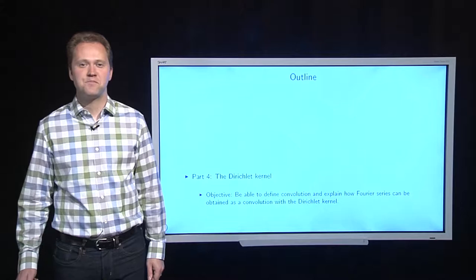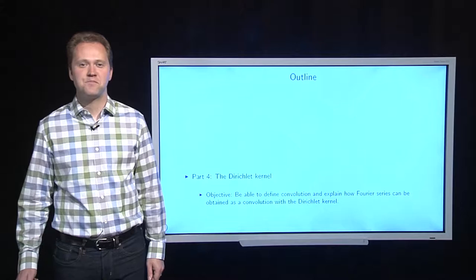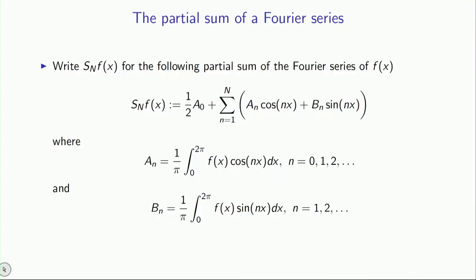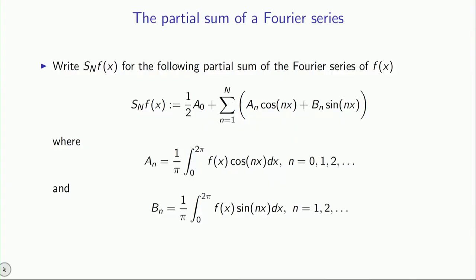But with that, let's move on and do some math. In part three of this sequence, we saw the full expression of a Fourier series, which is an infinite sum. Now in order to explore whether that sum converges or how it converges, you need to look at partial sums.